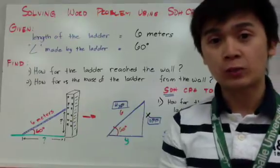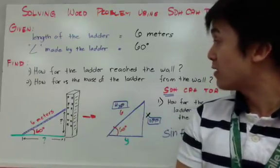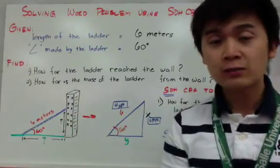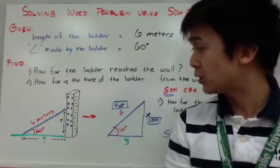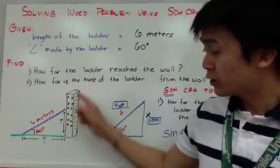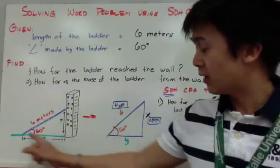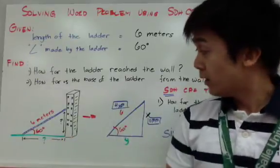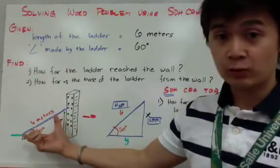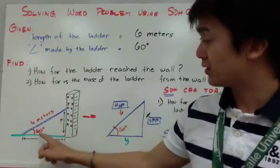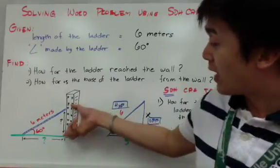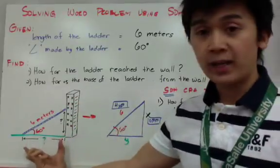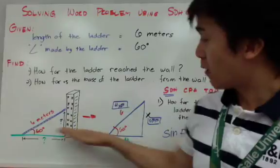There are two questions we need to answer: first, how far does the ladder reach the wall, and second, how far is the base of the ladder from the wall? Here's the diagram — the building, the ladder, and the ground, with the angle formed by the ladder with the ground. We are given the ladder measurement of 6 meters and the angle of 60 degrees. We need to find the height and the base distance.